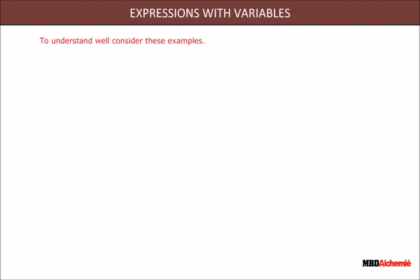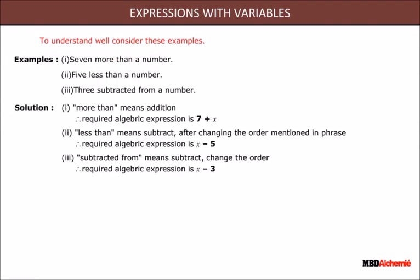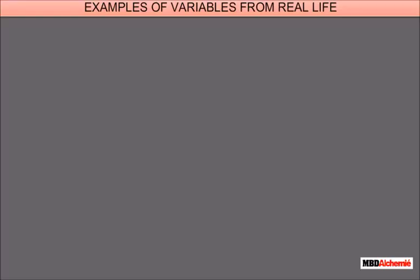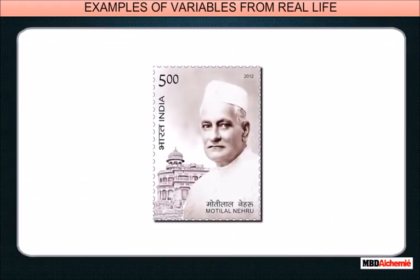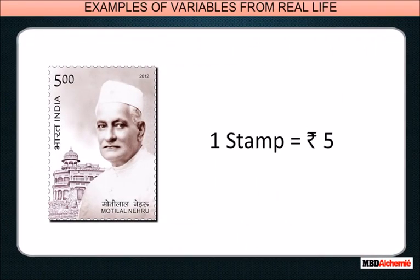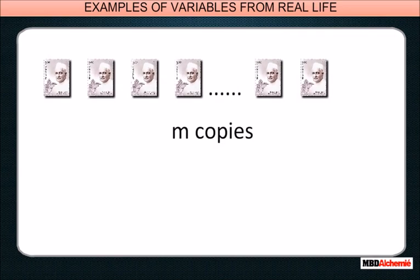To understand well, consider these examples of variables from real life. Vedika wants to buy stamps worth five rupees. If she wants to buy 16 stamps, then she must carry five times 16 rupees or 80 rupees to buy them. Similarly, if she wants to buy m stamps for any variable m, then she must carry 5m rupees. Note that m can be one, two, three, etc.